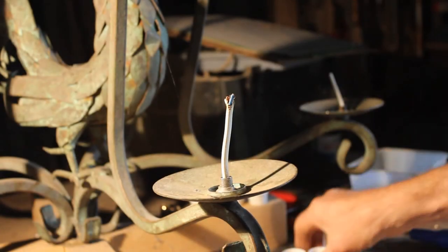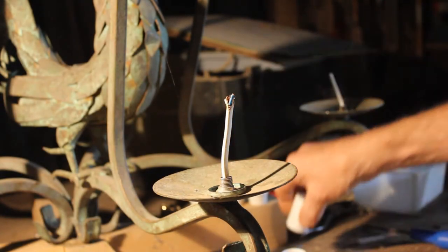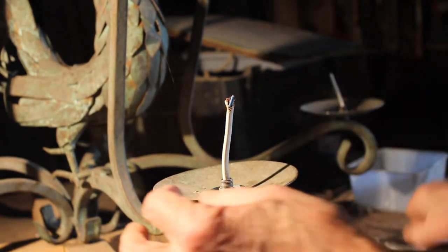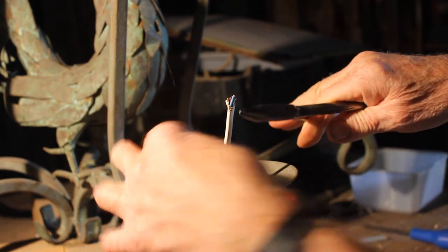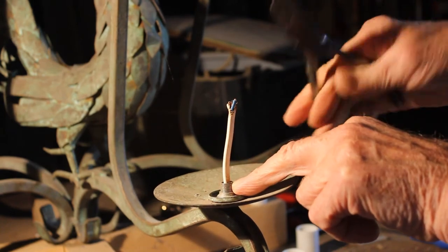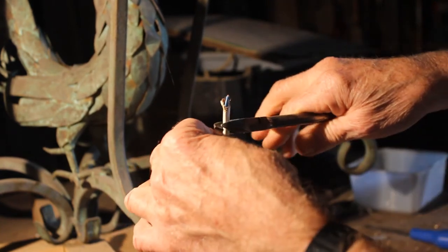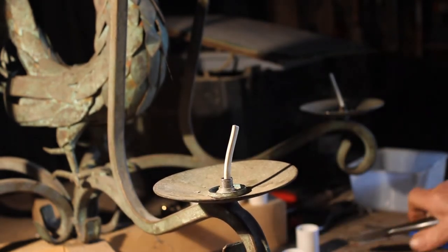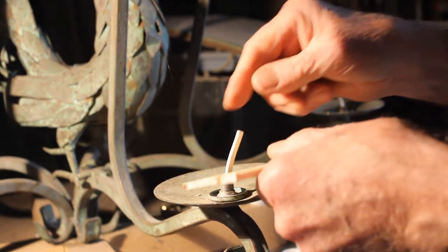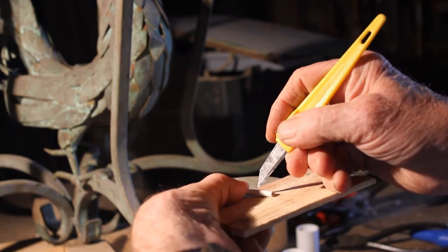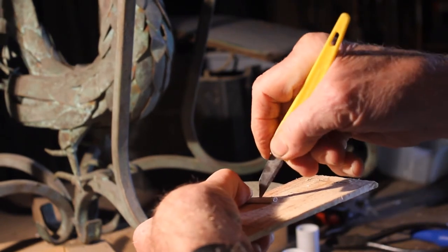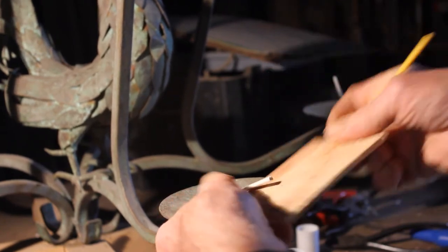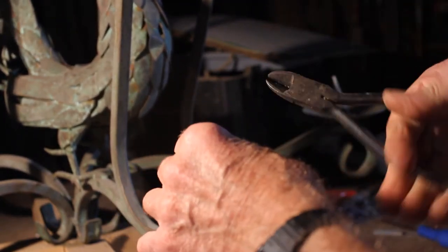I'm now ready to put the light fitting on. So what I do here is I'm going to cut this flex here about two inches from the exit of the nipple. And now I'm going to split that back to expose the wires, and trim off the outer sheath.